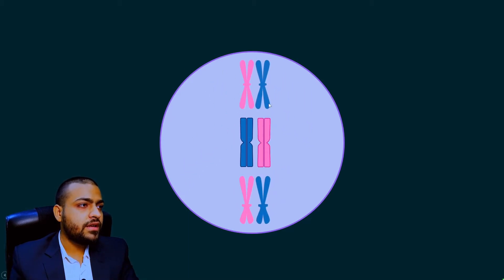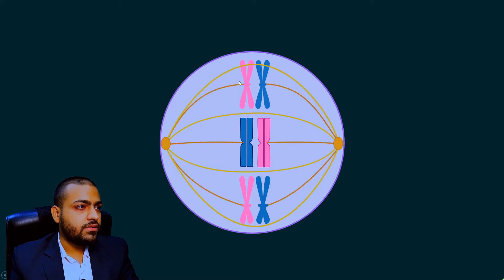So, let's suppose here these are the homologous chromosomes that are arranged on equator and spindle fiber arise and now what happens, during this is metaphase and during anaphase these spindle fibers will pull these chromosomes.